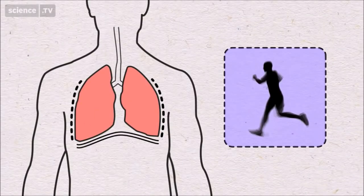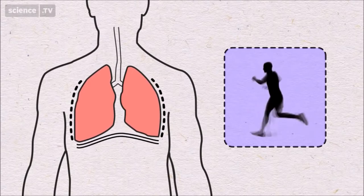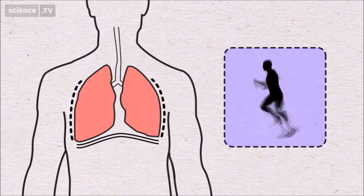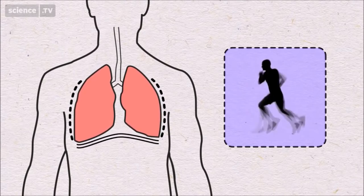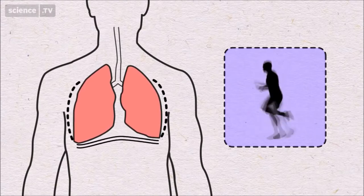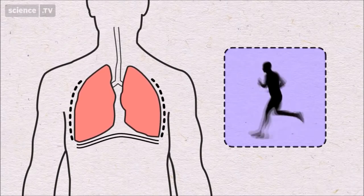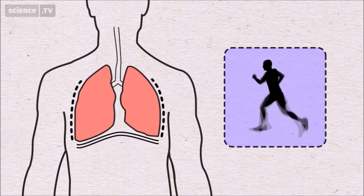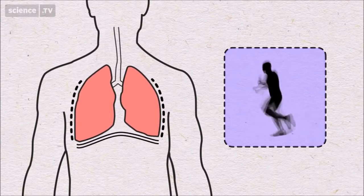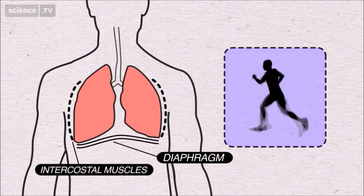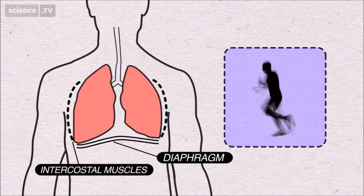What happens in the lungs when you exercise? Your body might want 15 times more oxygen — a huge rise in fuel consumption. So your lungs breathe deeper, pulling in more air, and faster, replacing air more often, until the muscles that expand and contract the lungs reach their limit. Athletes can breathe faster than unfit people because their diaphragms and the muscles between their ribs are stronger — it's all down to exercise.